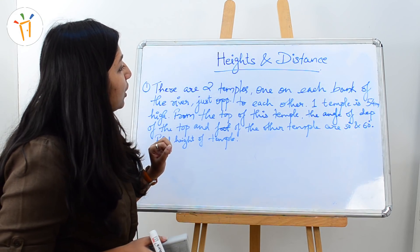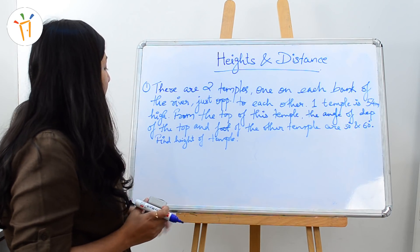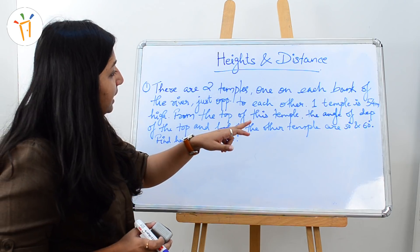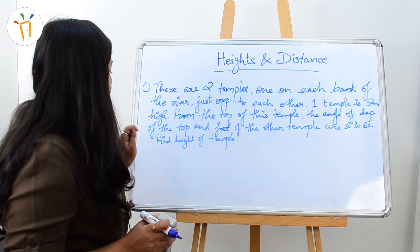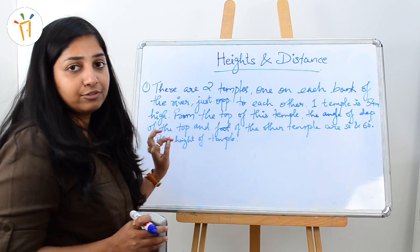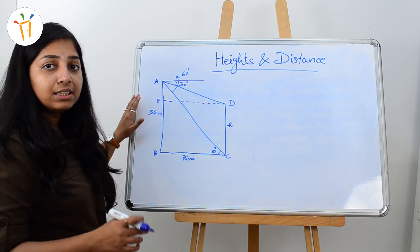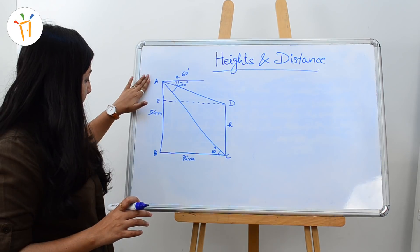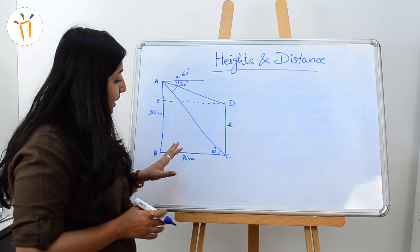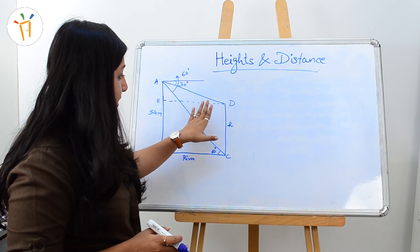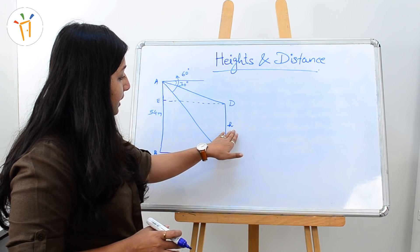There are two temples on each bank of the river, just opposite to each other. One temple is 54 meters high. From the top of this temple, the angle of depression of the top and foot of the other temple are 30 degrees and 60 degrees. The question is to find the height of the other temple. Let's start by drawing the diagram. In this, we already know that AB, which is our first temple, is of height 54 meters, and our question is to find CD — the height of the second temple on the opposite bank of the river. Let us consider it as H.